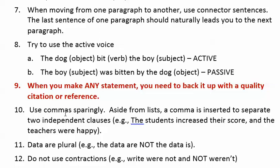Number ten: use commas sparingly. A comma is inserted to separate two independent clauses. For example, 'the students increased their score, and the teachers were happy' — both parts are complete sentences, so a comma goes before 'and.' Otherwise, you don't need it. Number eleven: data are plural — you say 'the data are,' not 'the data is.' Number twelve: do not use contractions, so say 'were not' and 'it is' instead of 'weren't' and 'it's.'